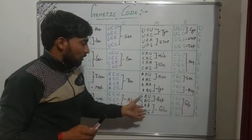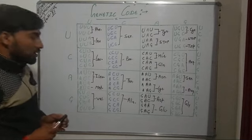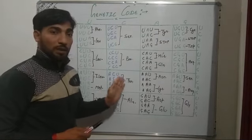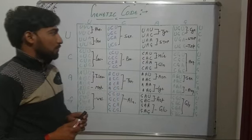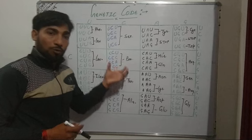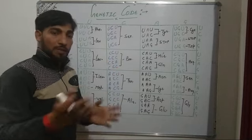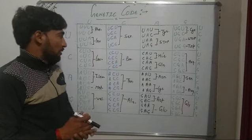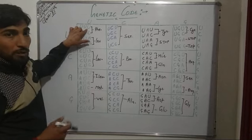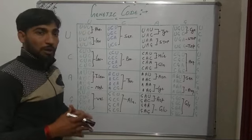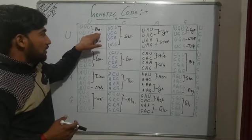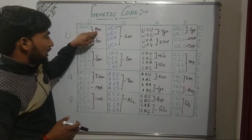So we get a total of 64 codons, which are coding for 20 amino acids. We will now discuss the triplet codons coding for specific amino acids in this table. Here we have PHE for phenylalanine and LEU for leucine.